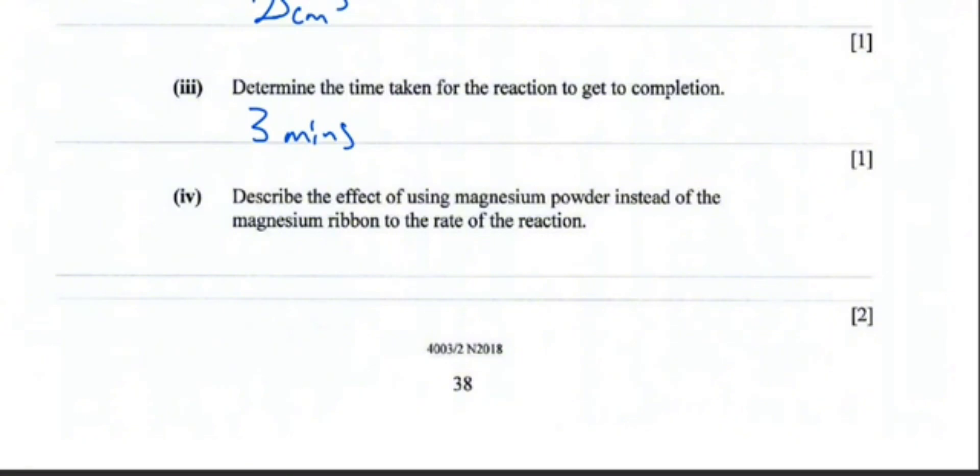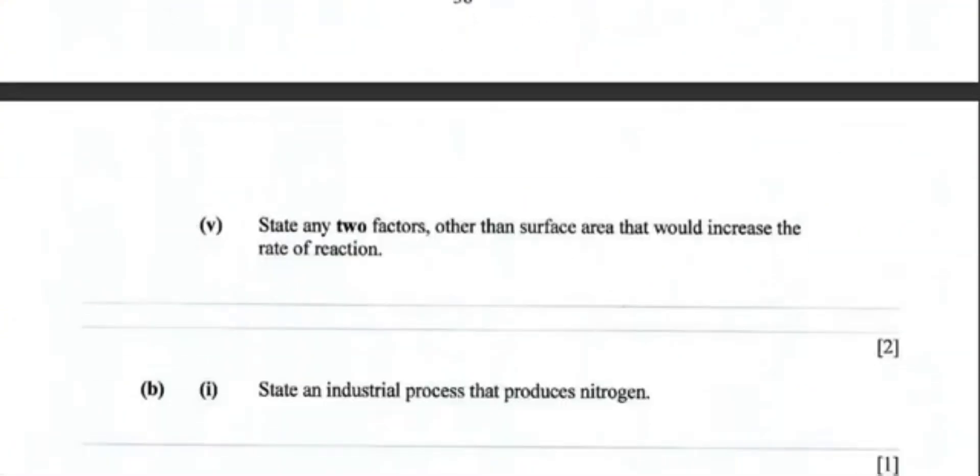State any two factors other than surface area that would increase the rate of reaction. The one thing that we should always write: increase in temperature of HCl, increase in concentration of HCl, and then the other one obviously using a finely divided catalyst.